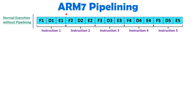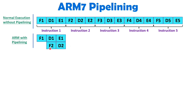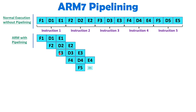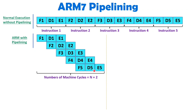Now, when we talk about ARM7, we will be having execution in parallel. When we have fetch, decode, execute of the first instruction, in parallel — when decode is happening, at that time the second instruction will get fetched. And when execute is happening, at that time the third instruction will get fetched. So you can observe, parallel execution is happening — that is what the 3-stage pipeline of ARM7 is.